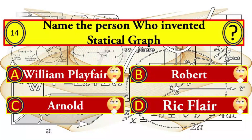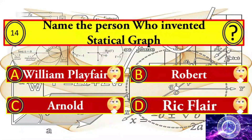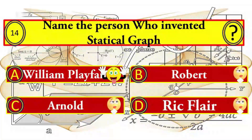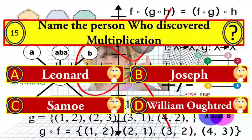Question number fourteen: name the person who invented the statistical graph. Your options: A) William Playfair, B) Robert, C) Arnold, and D) Rick Flyer. William Playfair is the right answer.